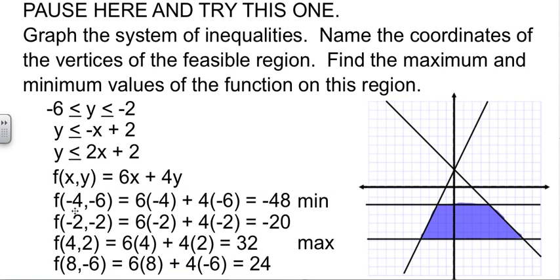And we shade in between these, and it gives us this trapezoid region. The four corners: negative 4, negative 6; negative 2, negative 2; 4, 2; and 8, negative 6. We plug those into the function. And we determine that 32 is the maximum value of the bunch, and negative 48 is the minimum value. Hopefully, you were able to drive through that without too much difficulty.